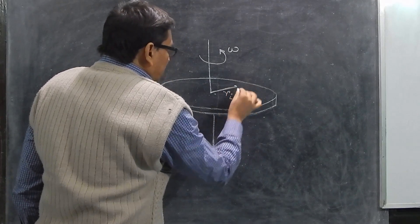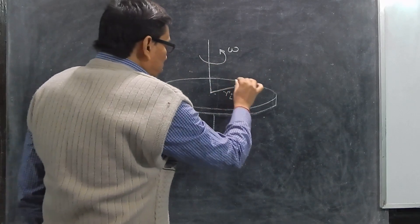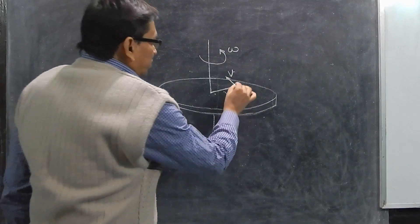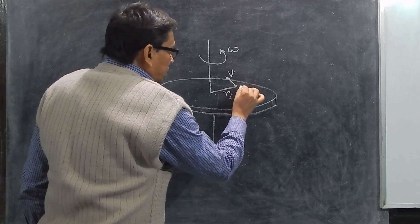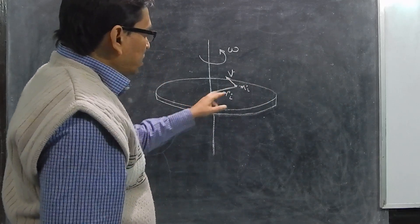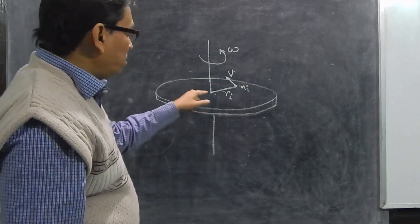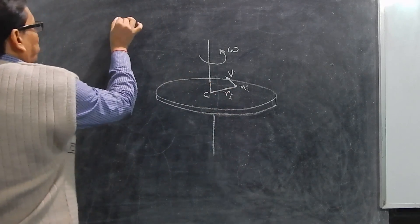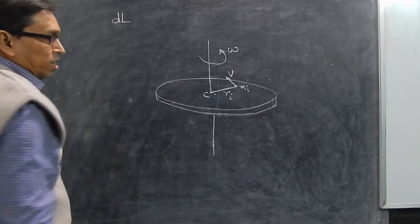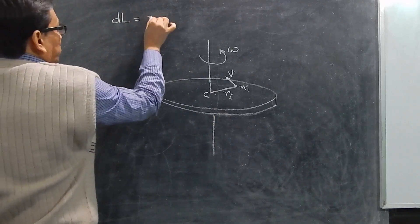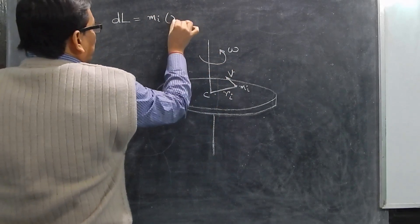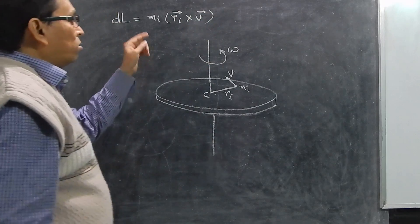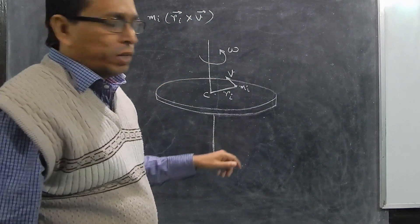Let us consider a point on the disk at radius ri. If the disk rotates, there will be a tangential velocity v at that point. If the mass of this small point is mi, then we can write its angular momentum about this axis as dl, where dl equals the mass of this small particle times ri cross v.